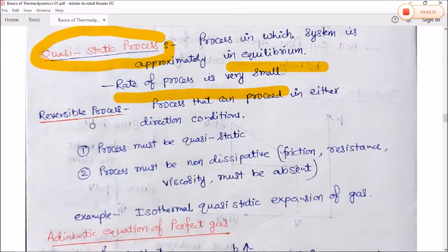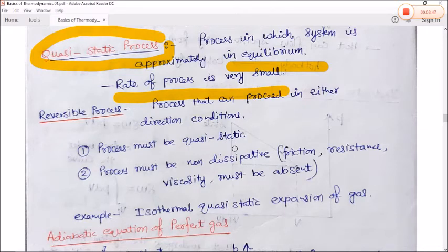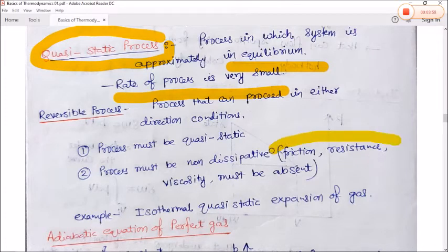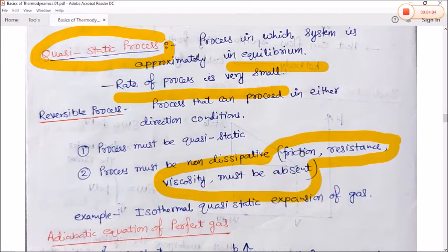A reversible process is one that can proceed in either direction. Conditions: the process must be quasi-static (i.e., very slow), and the process must be non-dissipative — meaning friction, resistance, and viscosity must be absent. All these external dissipative agents must be absent so that the process moves slowly and changes gradually.